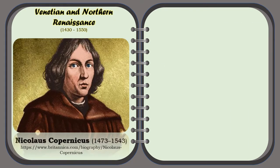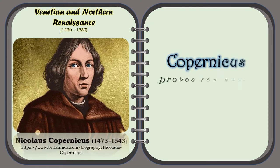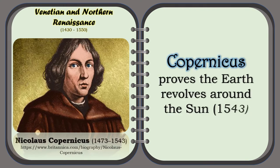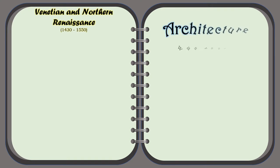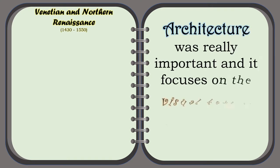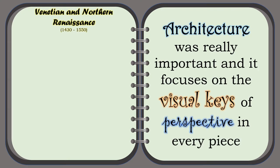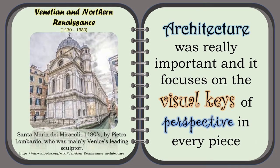Nicolaus Copernicus. In this period, Copernicus also proved that the earth revolves around the sun, in 1543. Architecture was really important, and it focuses on the visual keys of perspective in every piece. For example, the Santa Maria dei Miracoli, 1480s, by Pietro Lombardo, who was mainly Venice's leading sculptor.